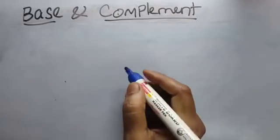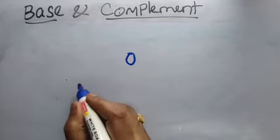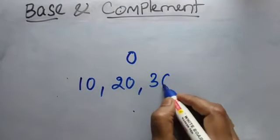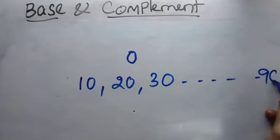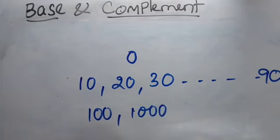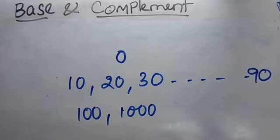Base is always the number ending with zeros. Suppose the base are 10, 20, 30, like so 90, even 100, 1000. Everything where the numbers are ending with zero, we can say that is base.